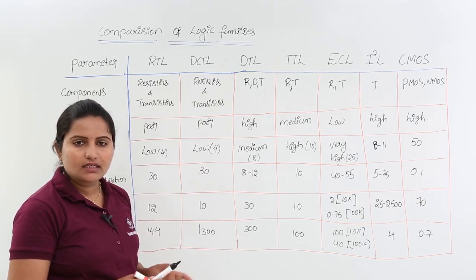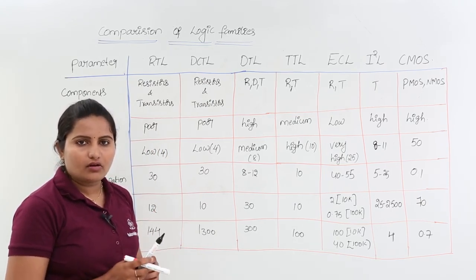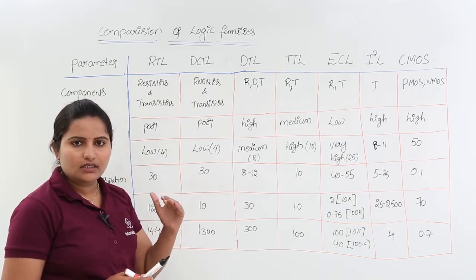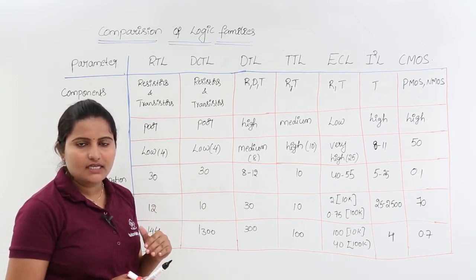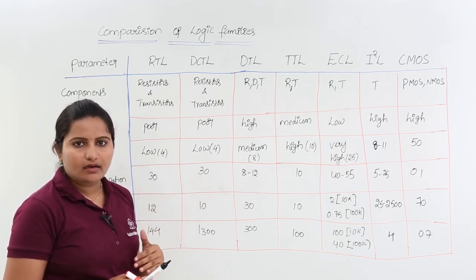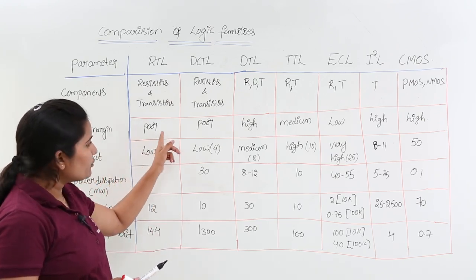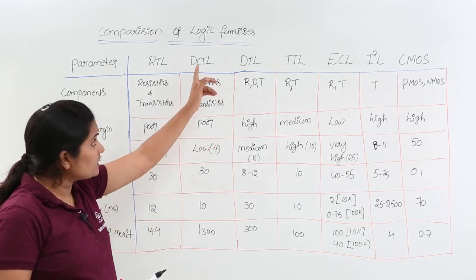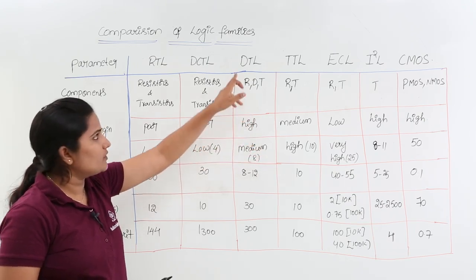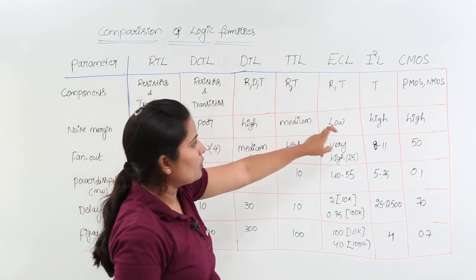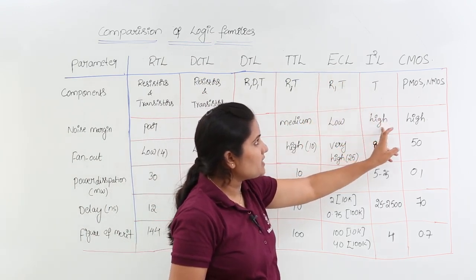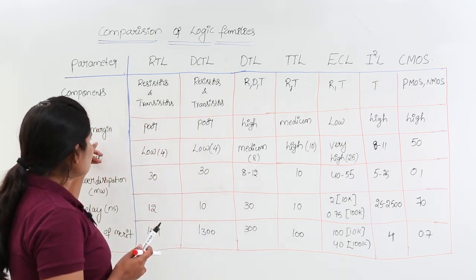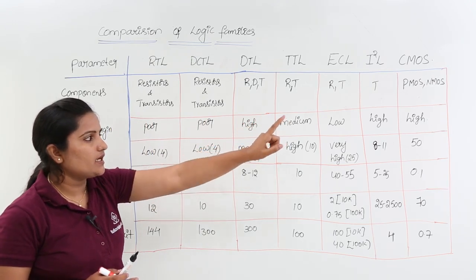The next factor is noise margin, which is the limit of noise that a circuit can bear. The noise margin is poor for RTL — meaning it is noise sensitive — and also poor for DCTL. Noise margin is high for DTL, medium for TTL, low for ECL, and high for both I²L and CMOS. So DTL, I²L, and CMOS have high noise margin.